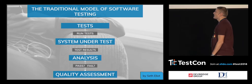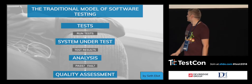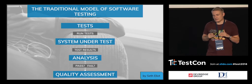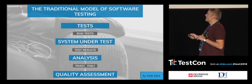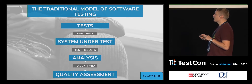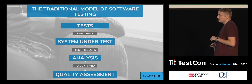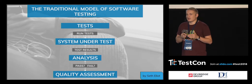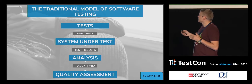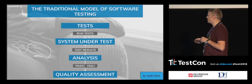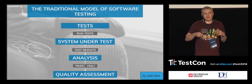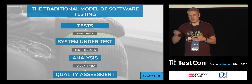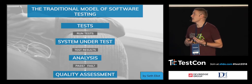Let me introduce you to what Seth Elliott drew as a classical model of software testing. We have tests, then we have the system under test, then we have analysis and quality assessments. Usually it's black and white — pass or fail. We run the tests, we have results, and it passes or fails. That's how test automation usually works: we have green, we have red.